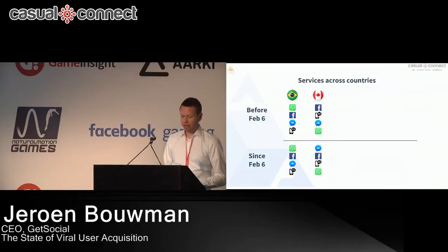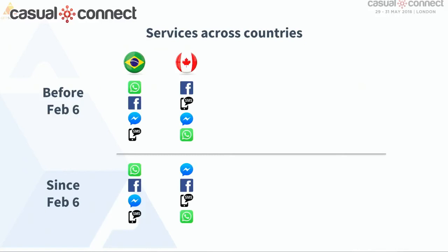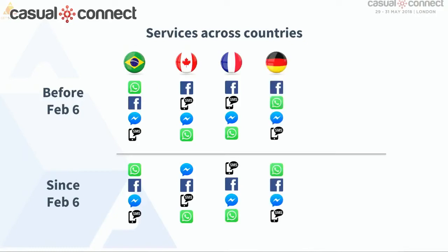In Canada, Facebook was always the biggest at 67% market share. After app invites were deprecated, Facebook went down to 25% and Messenger went up to 40%, with SMS right at Facebook's heels at 25%. In France, Facebook was the biggest, but now it's SMS — though Facebook is still 30% of the market and SMS is at 33%. In Germany, Facebook was the biggest at 55% with WhatsApp at 42%. After app invites were deprecated, they cover 98% of the market, but WhatsApp is now 87% of all sharing in Germany and Facebook is only 11%.